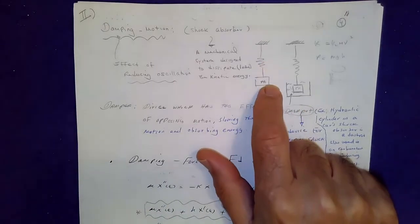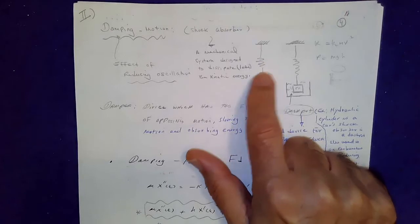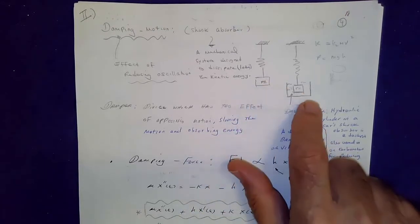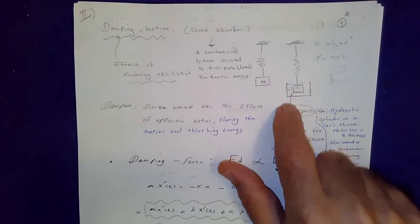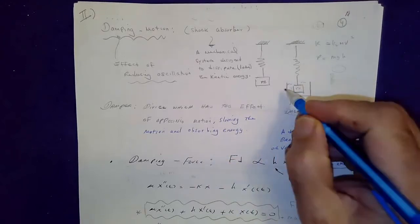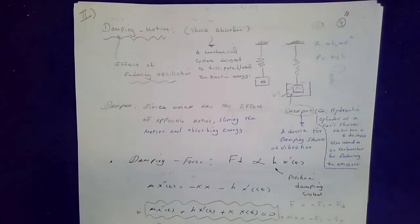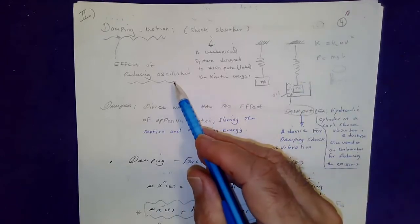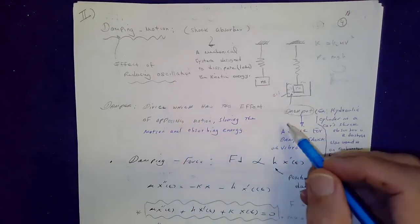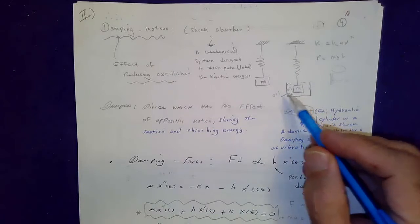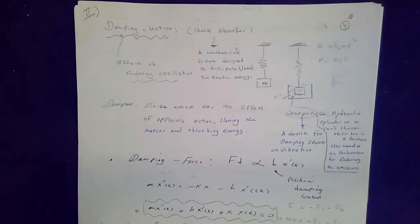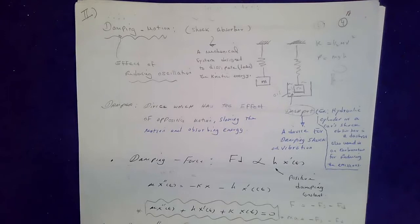In our experiment from part one, we were dealing with a spring with a mass attached to it. For damping force, suppose we let this mass go through a bucket of oil — that will reduce the amount of oscillation. Air resistance is also a damping force, which is also known as a drag force.